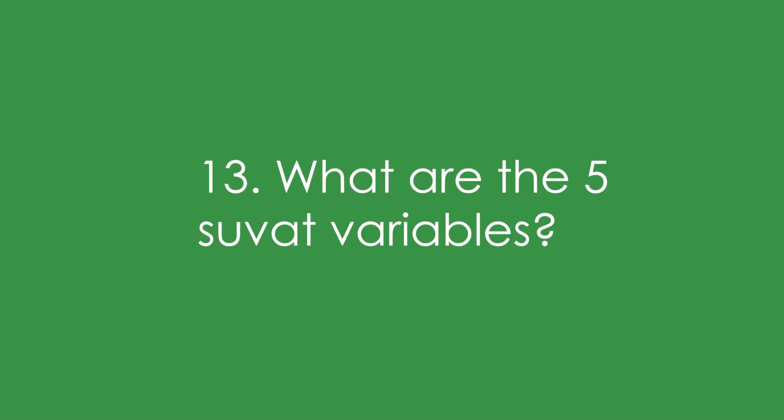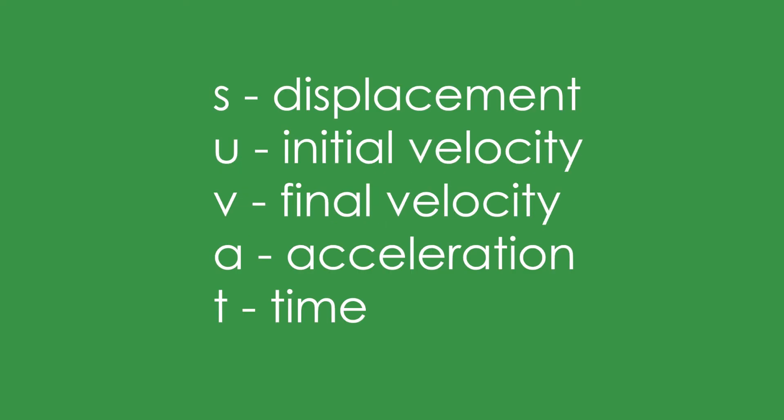13. What are the five SUVAT variables? S is displacement, U and V are initial and final velocity. A is acceleration, and t is of course time.